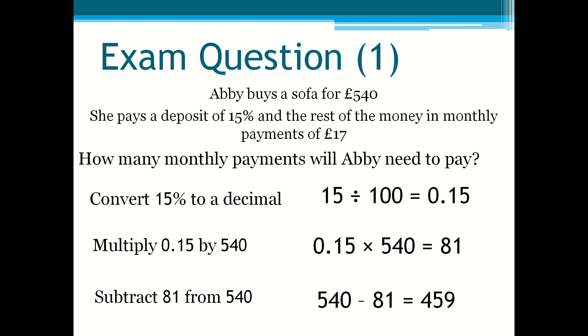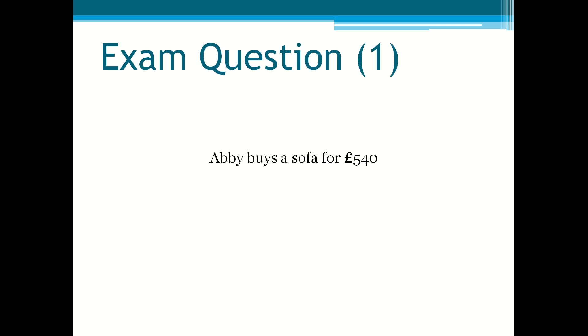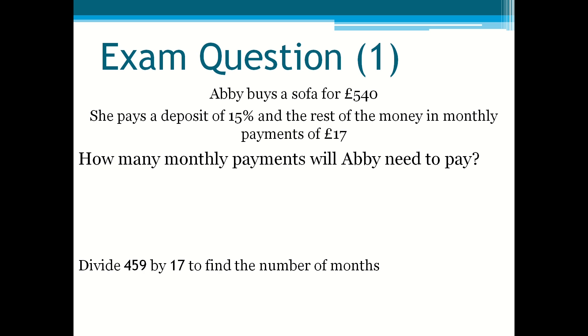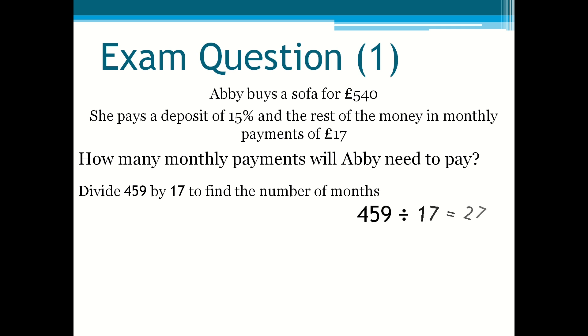Then divide 459 by 17 to find the number of months and that's 27. This means that Abby needs to pay 27 months of £17 payments in order to pay back the amount of money she owes for buying the sofa. So the number of months is 27.